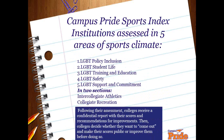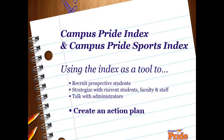The Sports Index is new and you can start taking it online now. It looks at five areas of sports climate: policy inclusion, student life, training and education, safety, and support and commitment. It's divided into two sections — intercollegiate athletics and collegiate recreation — because those may be separate or the same department. Your campus can take the assessment to figure out how to become more LGBTQ friendly, and if you choose to come out, your campus will appear on a public search page to recruit out LGBTQ students.